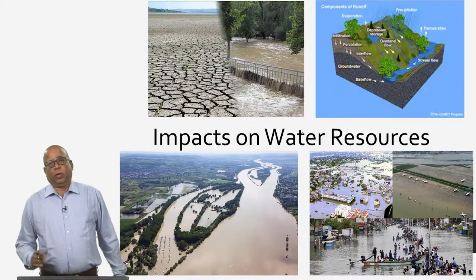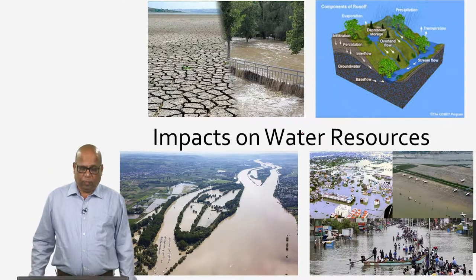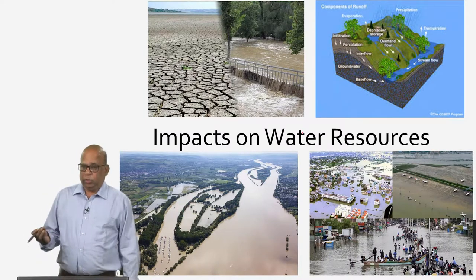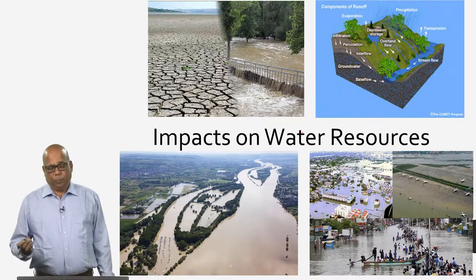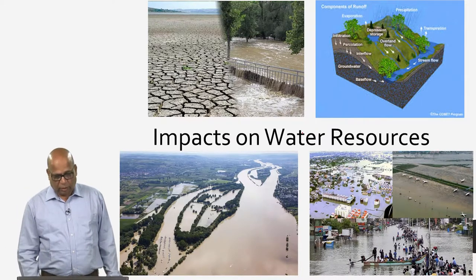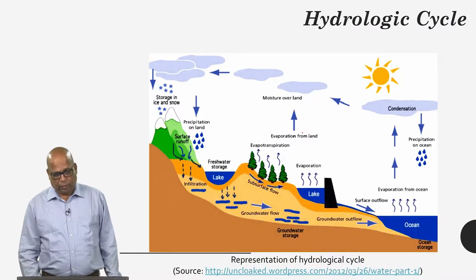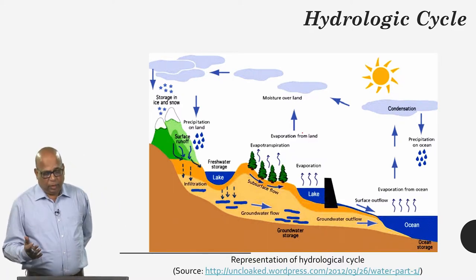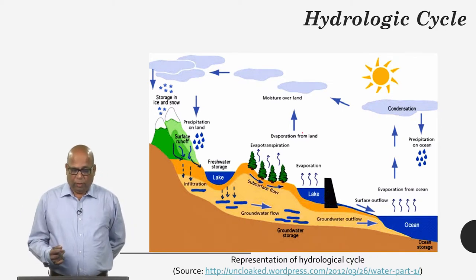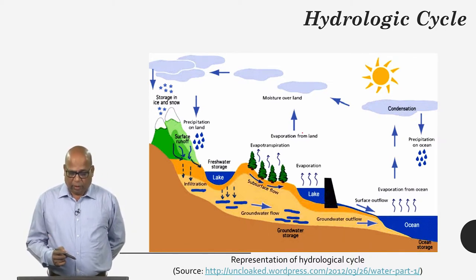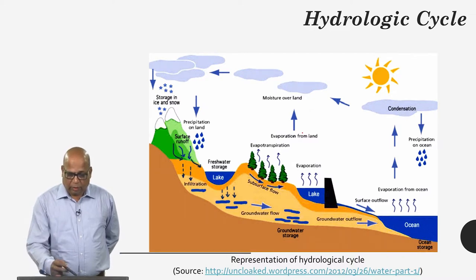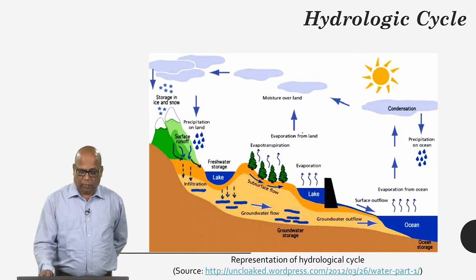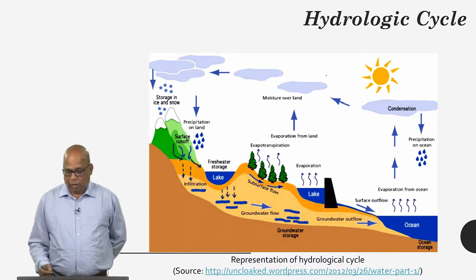It is important for us to realize that the major impact of climate change comes from the water sector, and we need to understand what are the impacts of climate change on water resources. We may deal with several aspects such as stream flow, ground water, and evapotranspirative demands which dictate agricultural water demands. To understand all of these, the most fundamental representation of the movement of water — the hydrologic cycle — we need to understand.